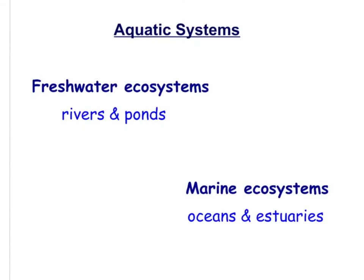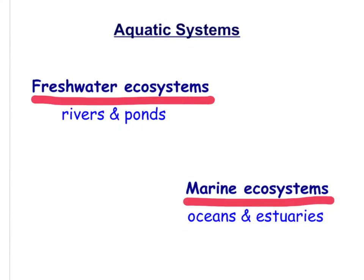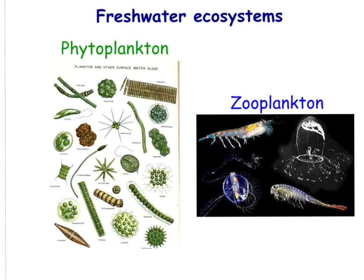Let's look now at aquatic systems. Aquatic systems are divided into two categories: freshwater ecosystems and marine ecosystems. Freshwater ecosystems include rivers and ponds. Marine ecosystems include oceans and estuaries. An estuary, in case you don't know, is a location where a freshwater stream meets the ocean. In freshwater ecosystems there is a huge variety of ecosystems — the motion of water in rivers creates very different factors than a pond or a marsh would.